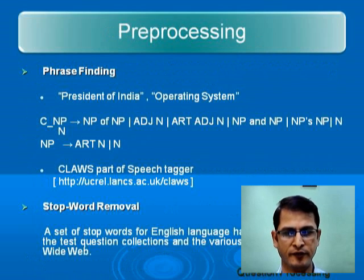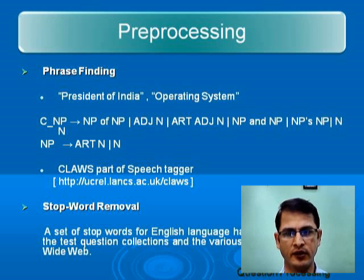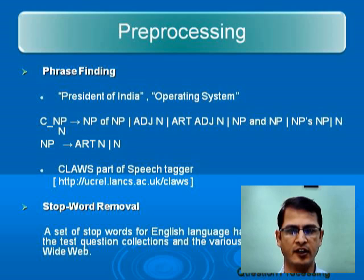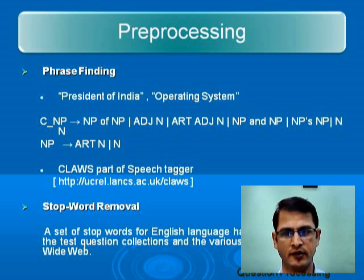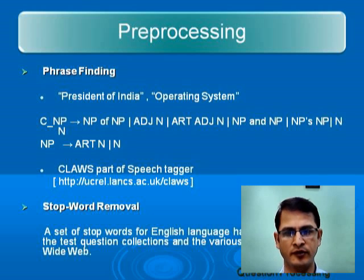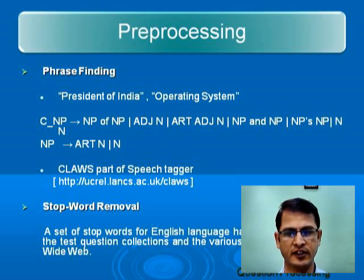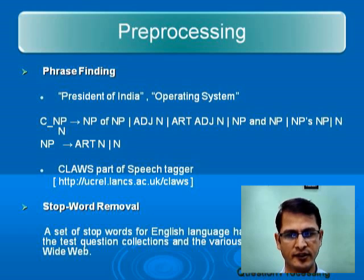Some pre-processing is required before going for document retrieval or query expansion. Some of them are phrase finding and stop word removal. For example, 'operating system' as a phrase indicates some software, but if you take 'operating' and 'system' separately, their meaning will be different. So to identify these phrases, we need to write some grammars. There are certain tools available on the internet — one of them is CLOWS. Second is stop word removal. There are certain words, for example: each, I am, should, would, they, is, that — these words don't contribute much to the meaning of the sentence, so they can be removed.